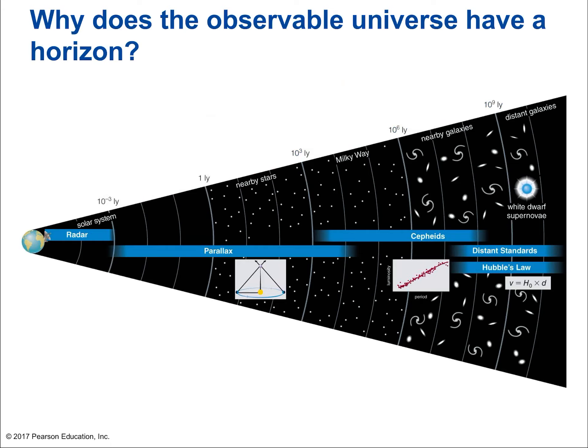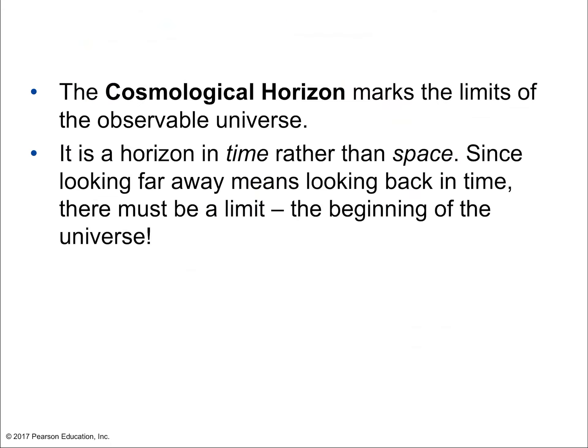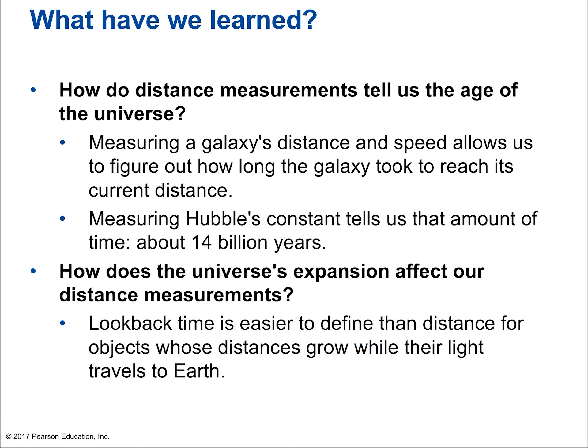Why does the observable universe have a horizon? The cosmological horizon marks the limit of the observable universe — it's a horizon in time, not just space. Since looking far away means looking back in time, there must be a limit: the beginning of the universe. That age equals 1 over Hubble's constant — that's as far back in time as you can look, because that's when all galaxies overlapped and were one. Measuring Hubble's constant tells us the age of the universe: about 14 billion years.